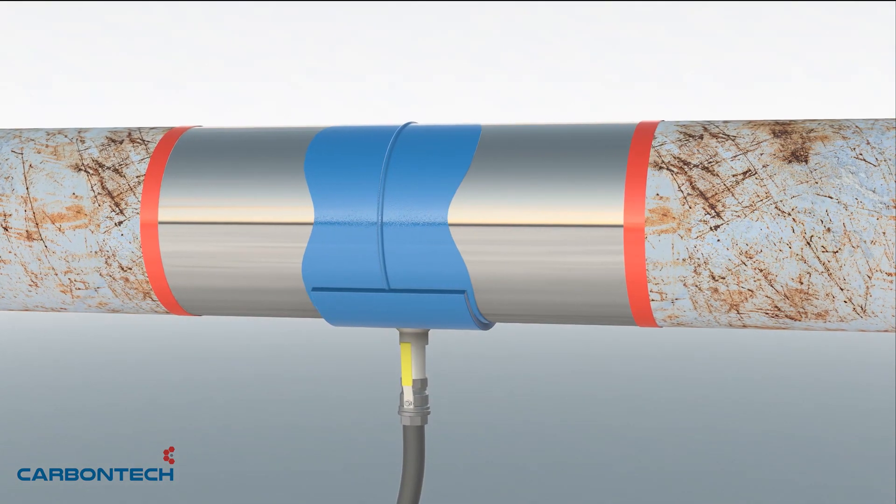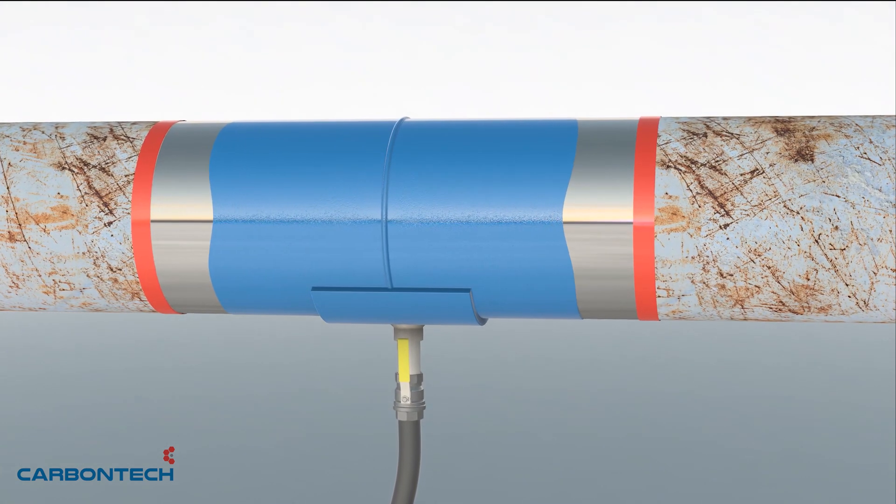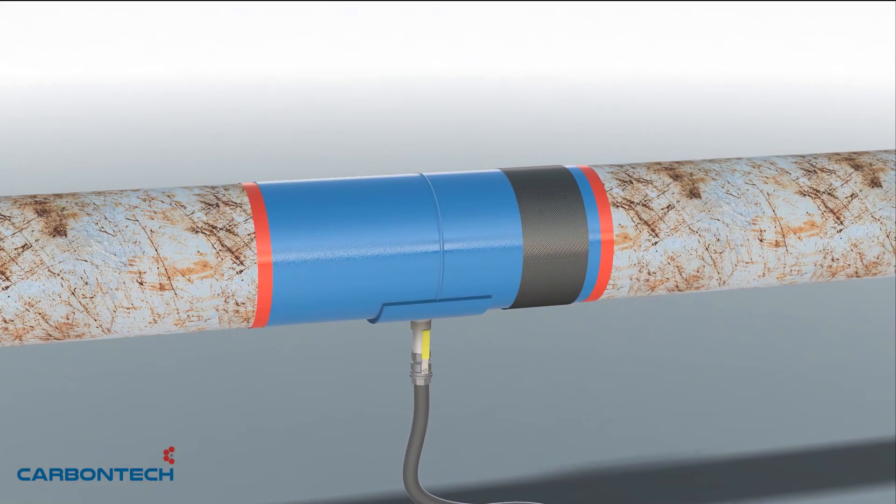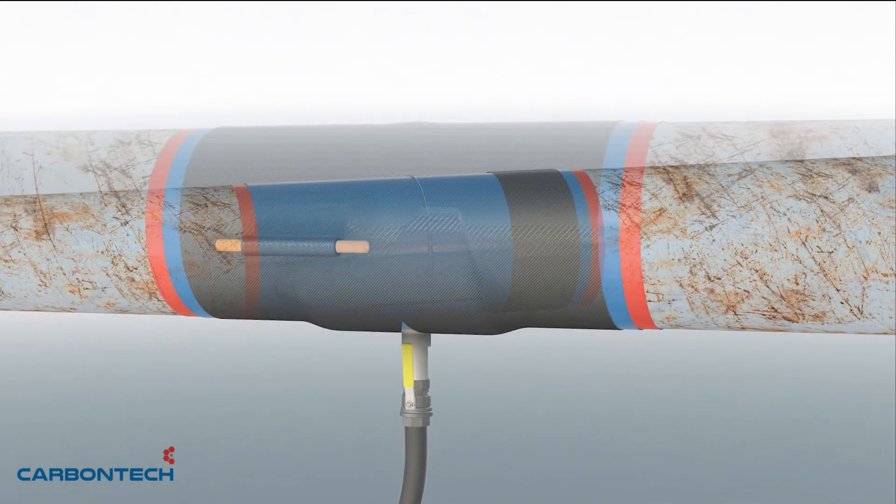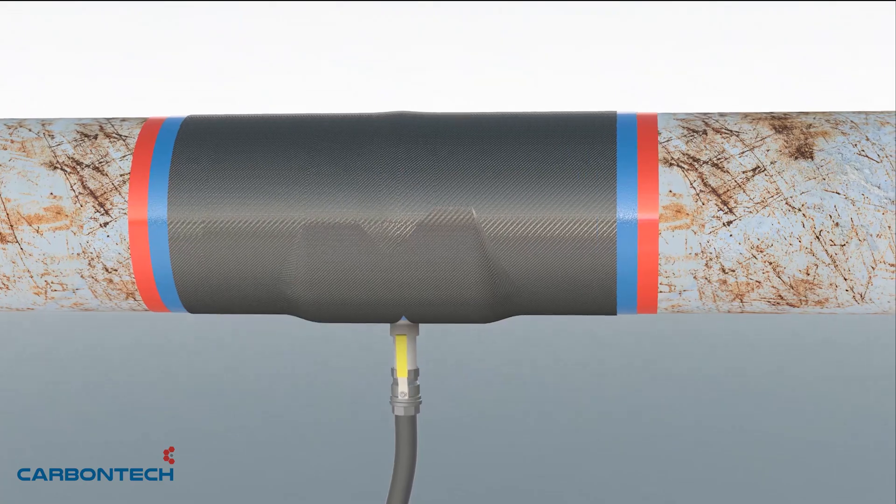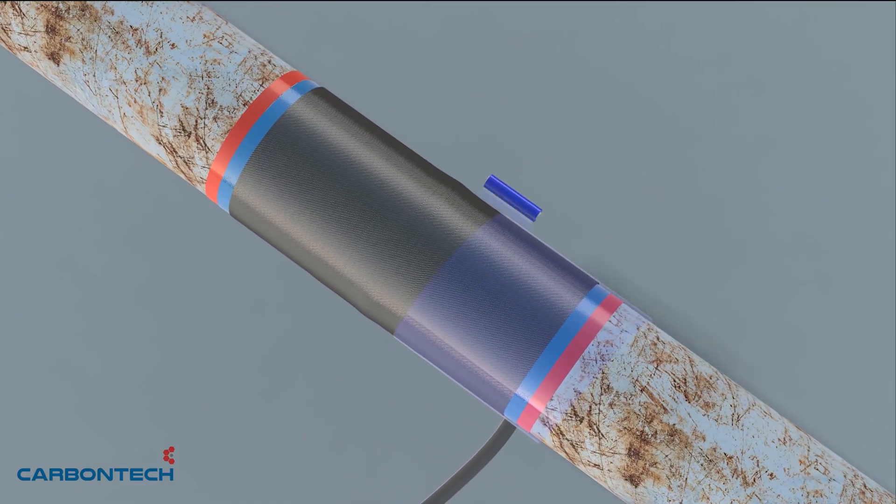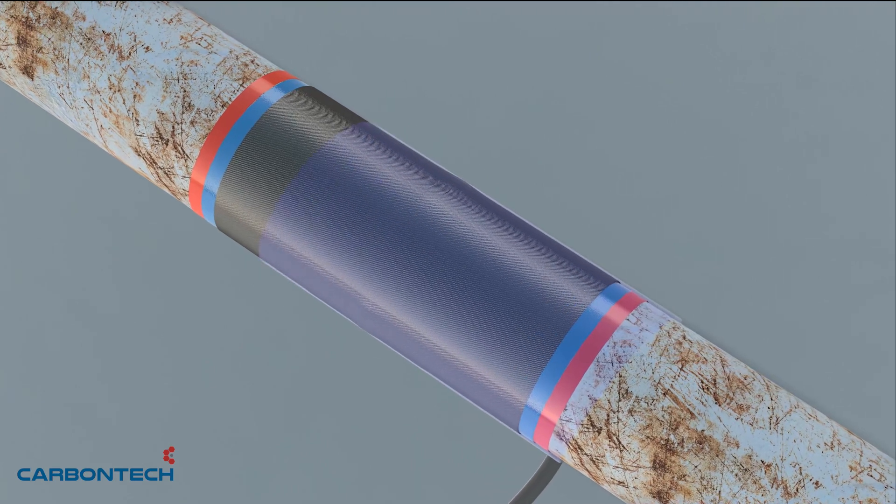RevoWrap primary layer is applied to evenly distribute loads and to act as a barrier for galvanic corrosion. RevoWrap may now be applied over the Rescue Plate to cover the entire desired repair area. RevoStretch is applied over the repair to consolidate the wrap and to protect the wrap from external conditions.